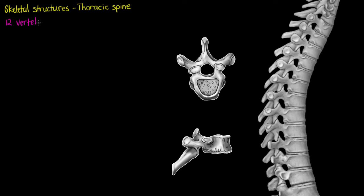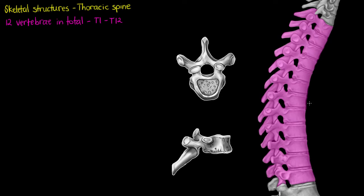In our thoracic spine there are going to be 12 vertebrae in total, and they are the T1 to T12 vertebrae — so thoracic 1 to thoracic 12. I've just highlighted them here: 12 vertebrae all up.